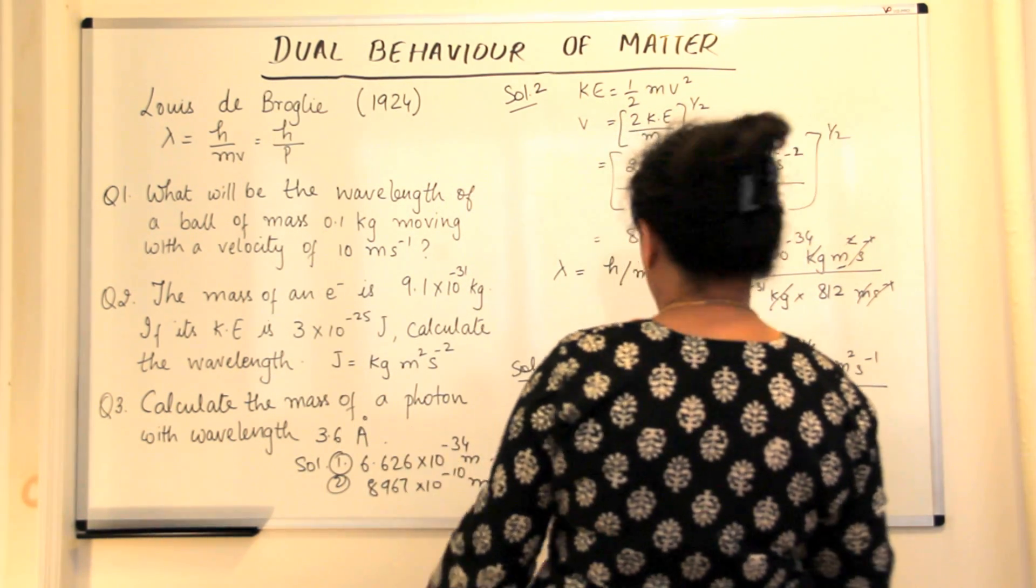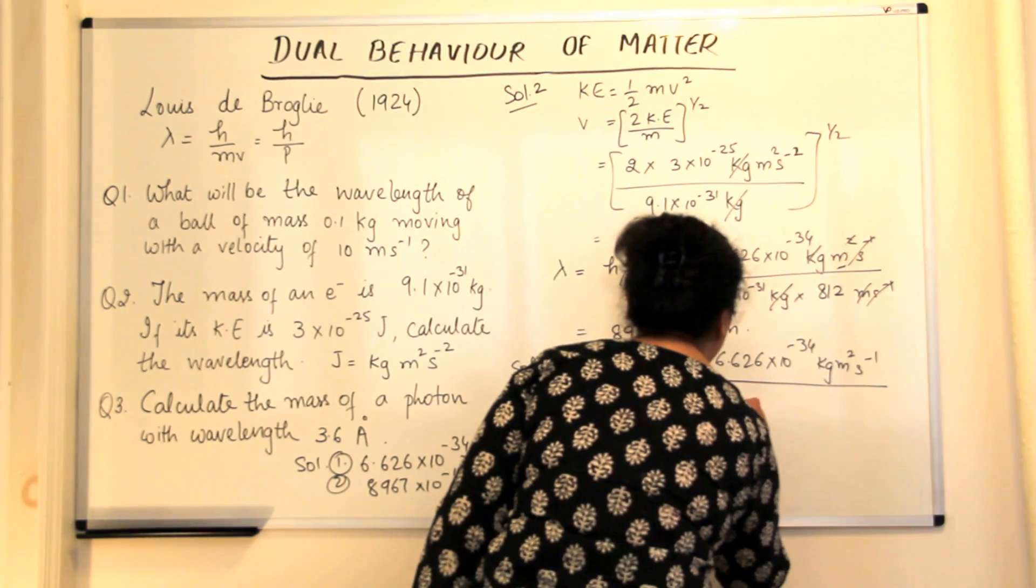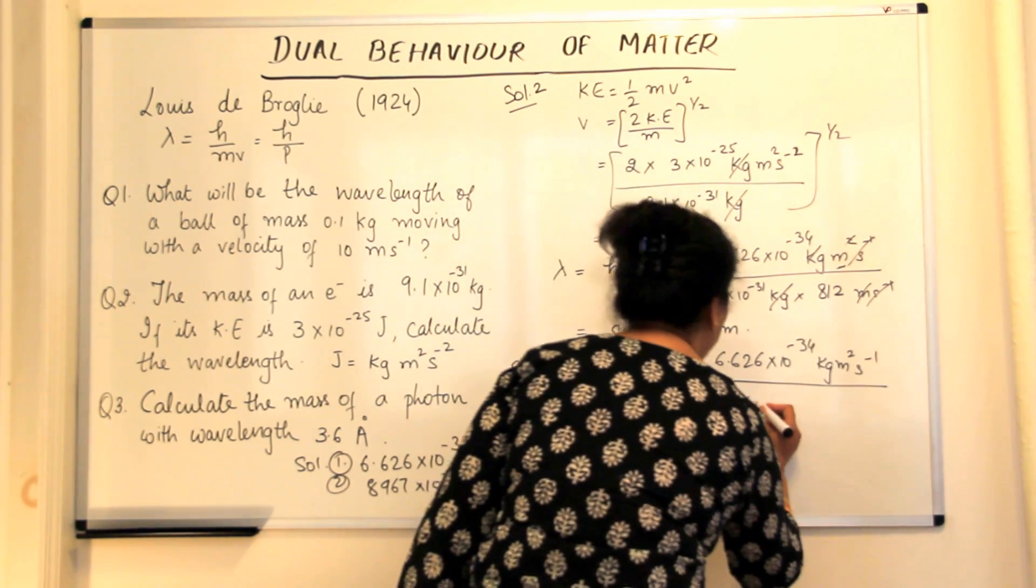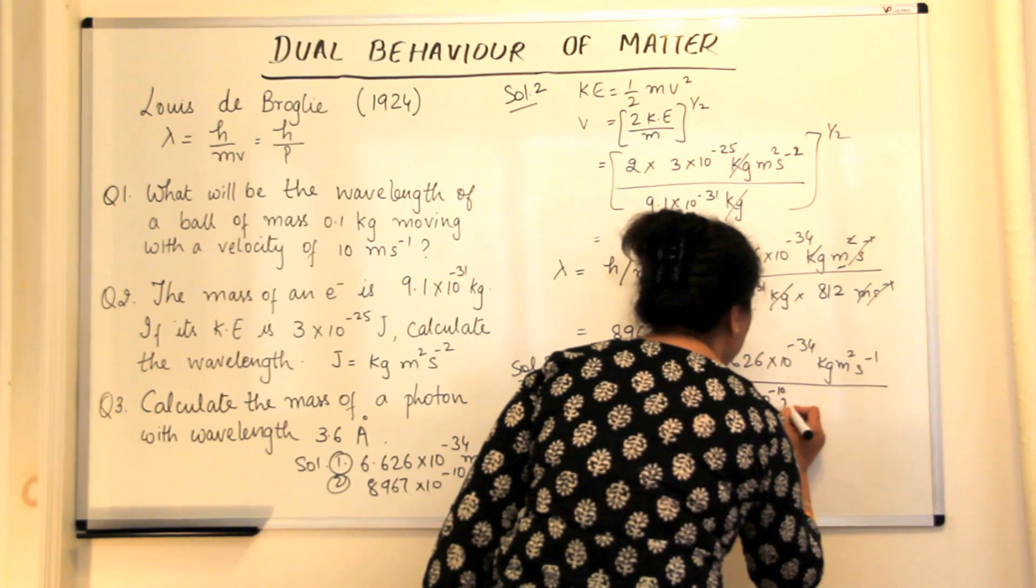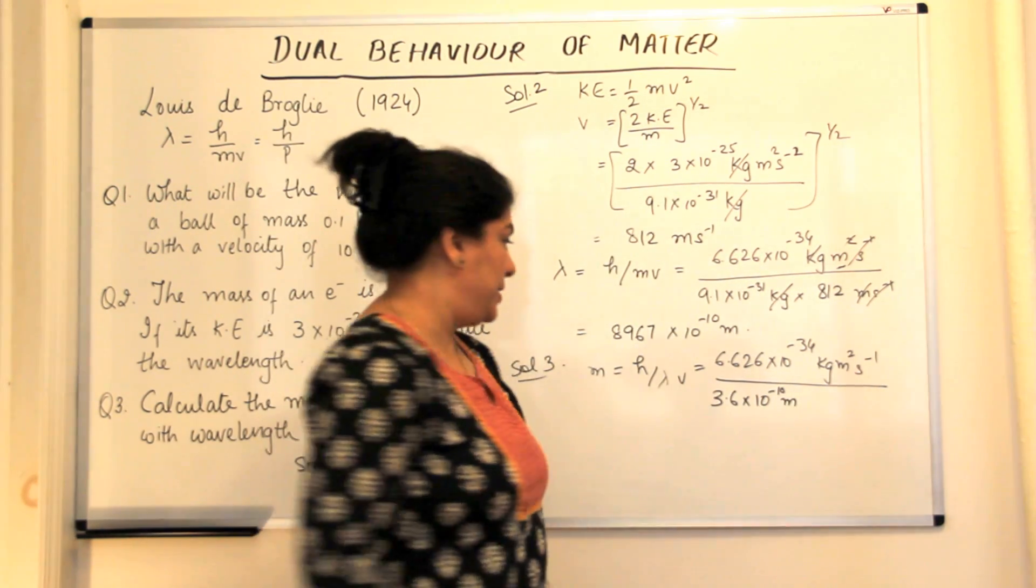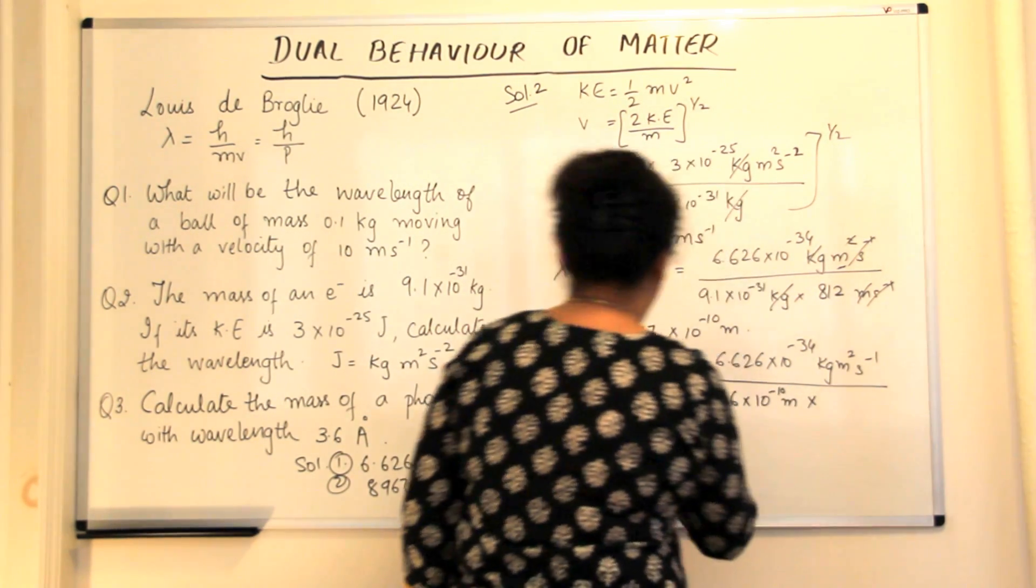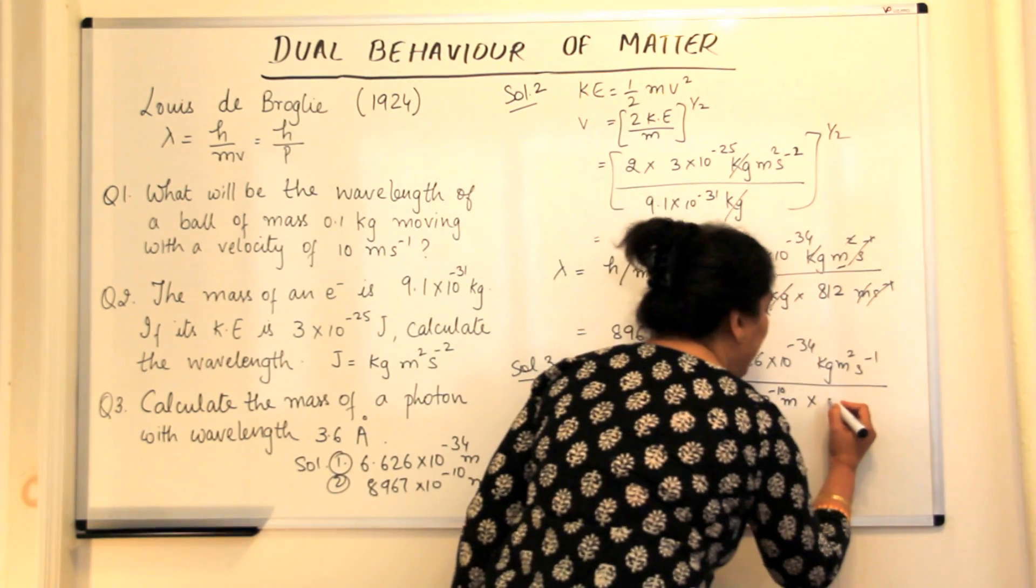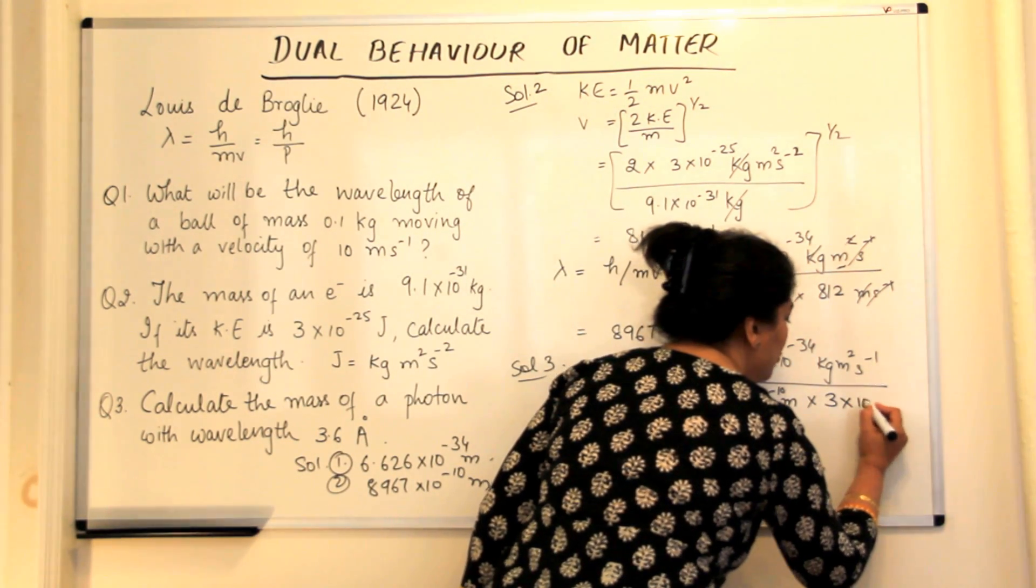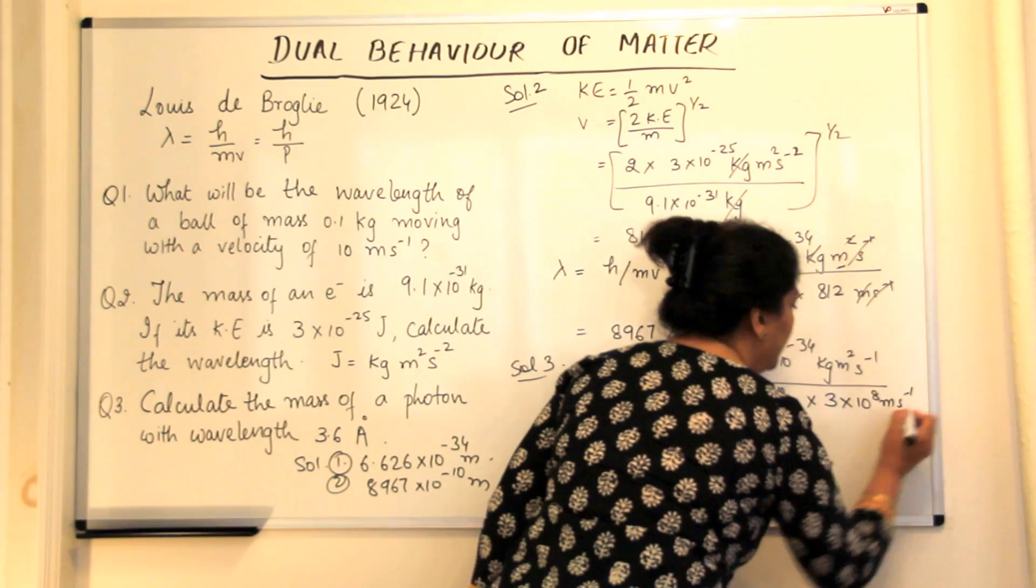Calculate the wavelength is 3.6 into 10 to the power minus 10 meters. We convert the Armstrong into meters. Into the velocity is the speed of light because it's a photon.